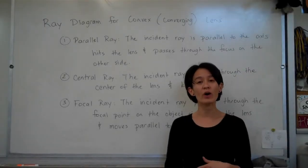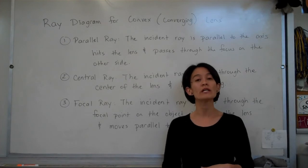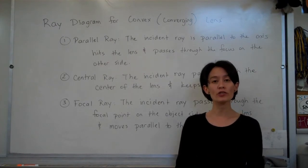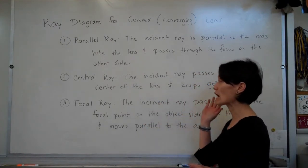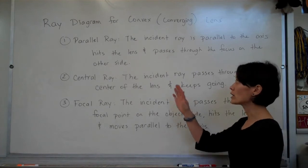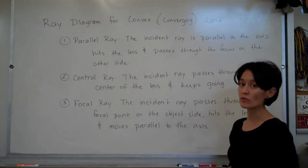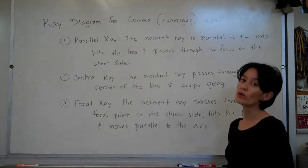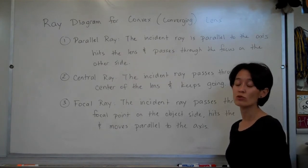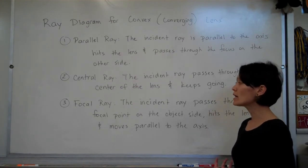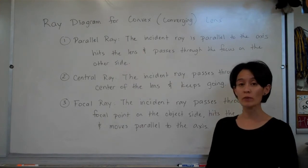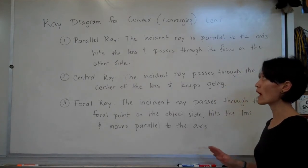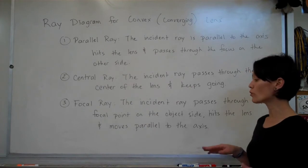Now I'm going to show you how light passes through a convex lens. We're going to investigate three particular rays: the parallel ray, the central ray, and the focal ray. Remember that there are thousands of light rays that can pass through a lens, but these three are the easiest to draw. Go ahead and pause the video, write down each of these rays, and then play the video again and we'll move on to the actual drawings.